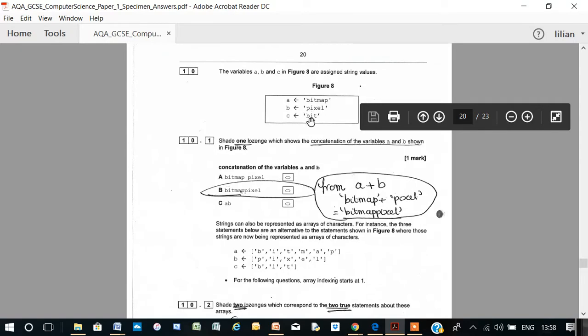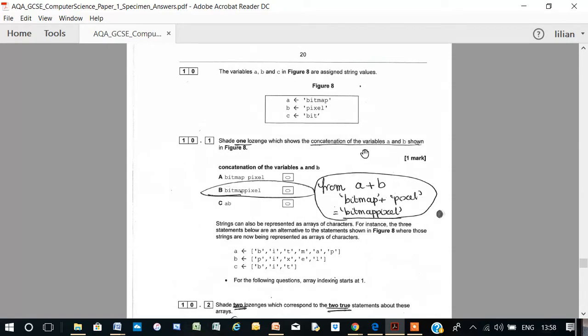Note that they are all strings. Shade 1, which shows the concatenation of the variables A and B, shown in figure 8. Concatenation means the joining together of strings.